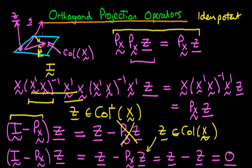We can think of I minus PX as representing an orthogonal projection operator, because when we operate it on a vector Z lying within the space orthogonal to the column space of X, we just get Z out — which is what we expect. And when we operate it on a vector which lies in the column space of X, we get zero out. So I minus PX is an orthogonal projector onto the space which is orthogonal to the column space of X.